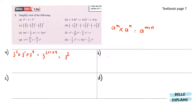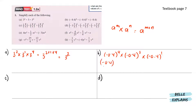Next for b, we have negative 0.4 to the power of 4 times negative 0.4 to the power of 3, times negative 0.4. Since there is no power on the last term, it will be a 1. So that will be negative 0.4 in a bracket to the power of 4 plus 3 plus 1, giving us negative 0.4 to the power of 8.